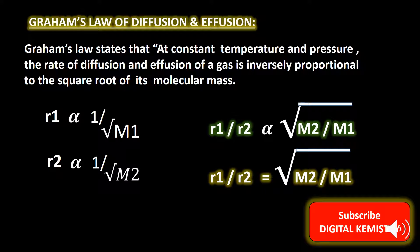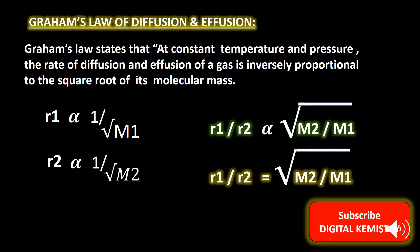R₂ is inversely proportional to the square root of the molar mass of the second gas. By removing the sign of proportionality, we get R₁ over R₂ is equal to the square root of the molar mass of the second gas over the square root of the molar mass of the first gas. This equation is called Graham's Law of diffusion or effusion in terms of molar mass.